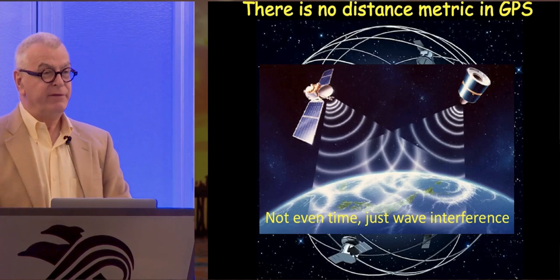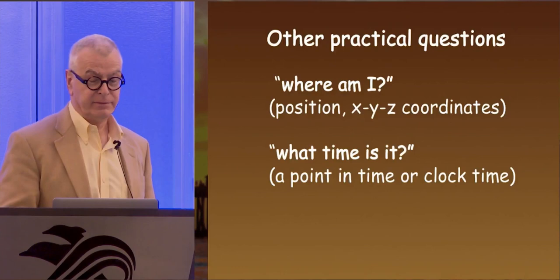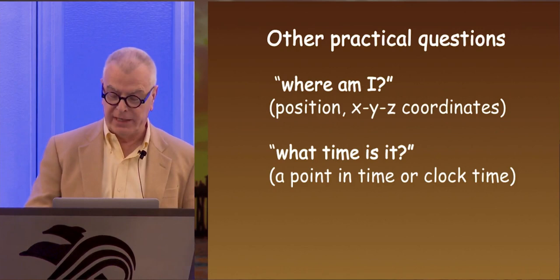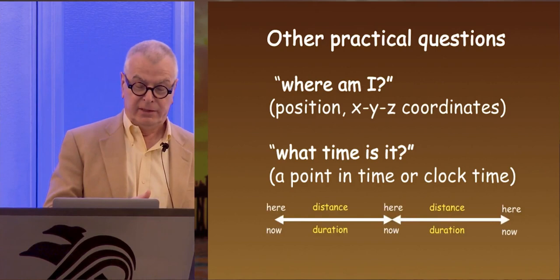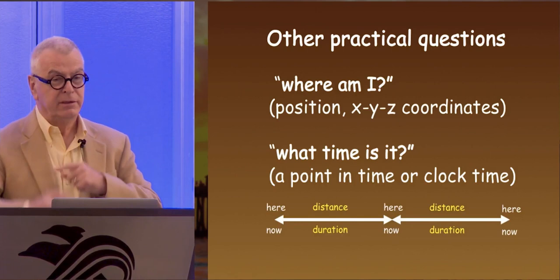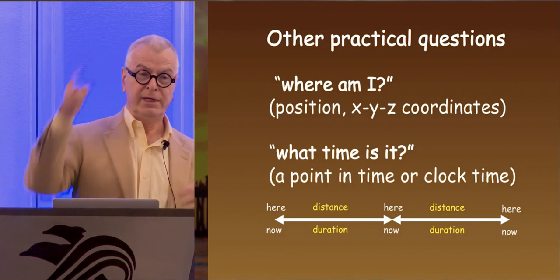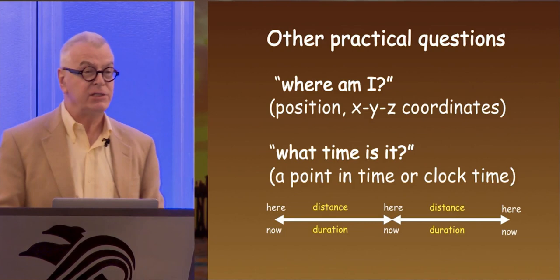We started with an abstract thing, two abstract things, and then we concretized it with the help of measuring instruments. When we had those instruments, we could ask interesting questions, such as where am I, what time is it, what date is it. The relationship between duration and now, between distance and here, is circular.